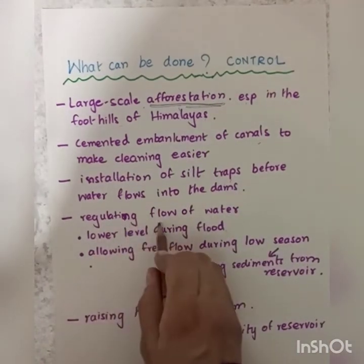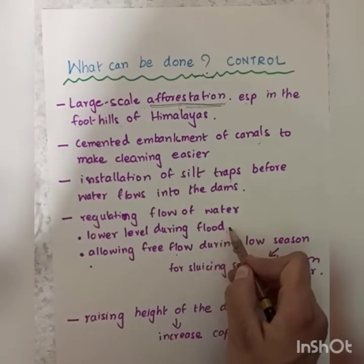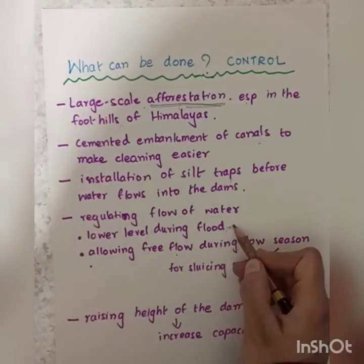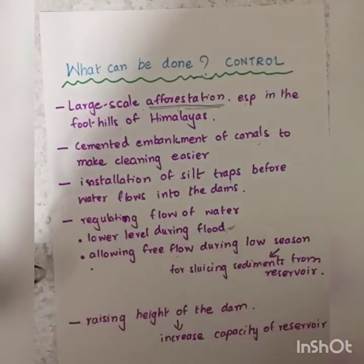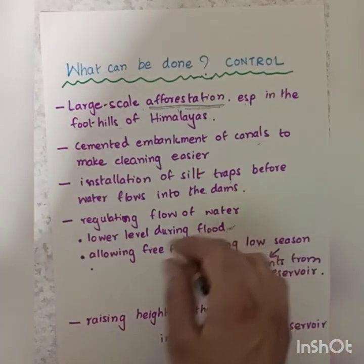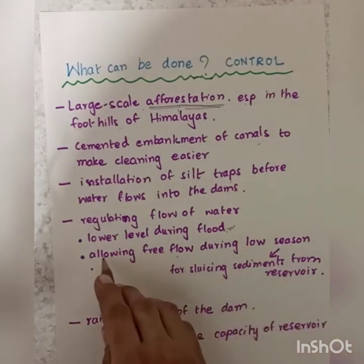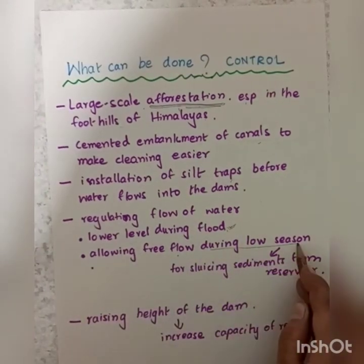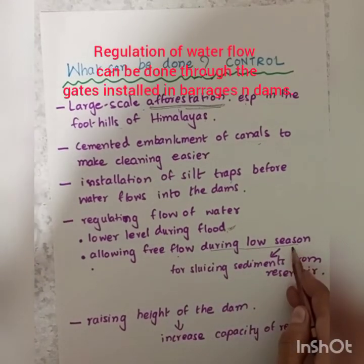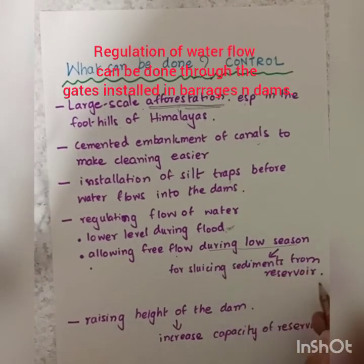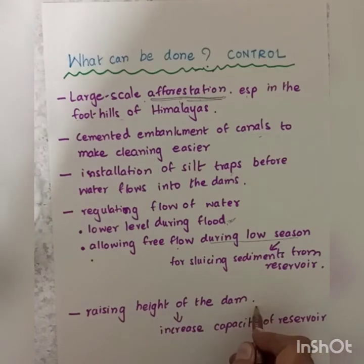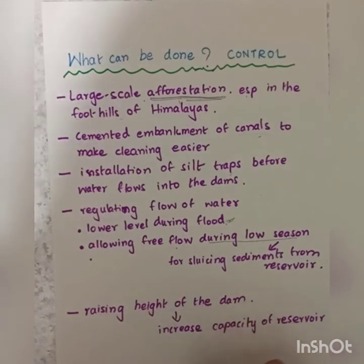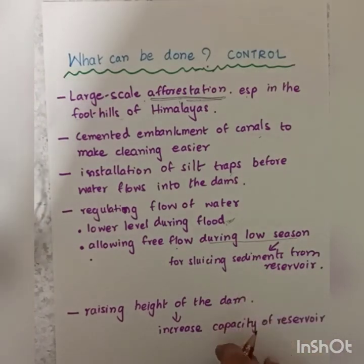Another step is regulating the flow of water. During flood times, when the velocity of the water is already very high, you can lower the speed of the flow so less silt deposits in the reservoirs. During the low season, you can allow free flow of water for sluicing sediments — removing the sediments — from the reservoirs. Finally, raising the height of the dam is also important, as this will increase the capacity of the reservoir. These are some of the measures that can be taken to control siltation.